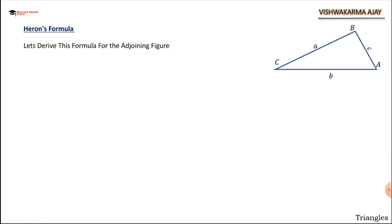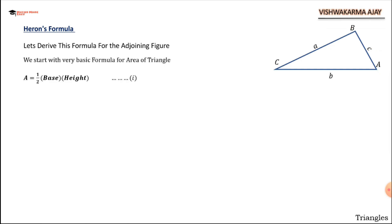Let's derive the formula for the adjoining figure. Triangle ABC has side lengths a, b, and c. We will start with the very basic formula: A equals half into base into height. We draw a height from point B to the base AC, and name the foot of the perpendicular as D and the height as h. This point D divides the base into two parts: x and (b minus x).